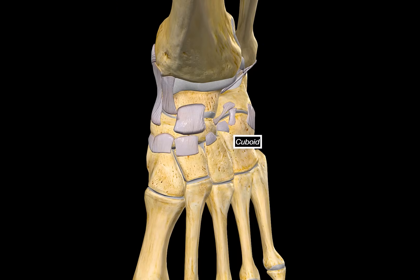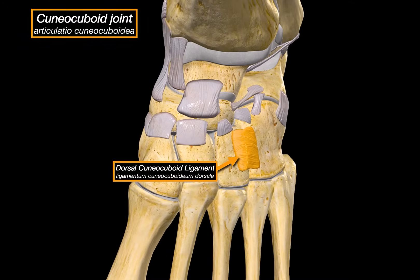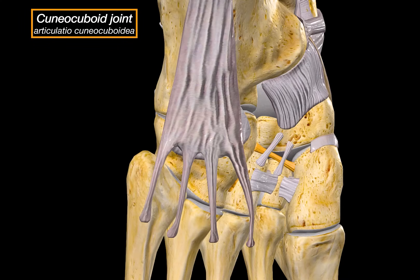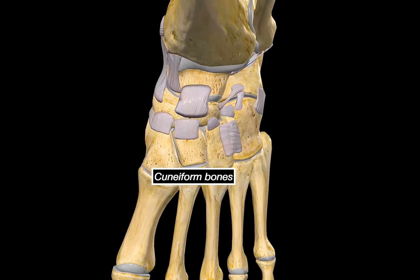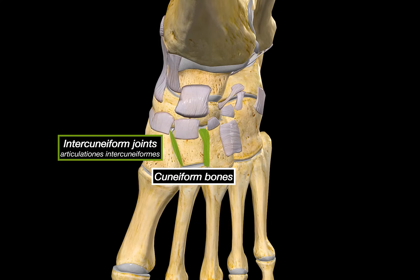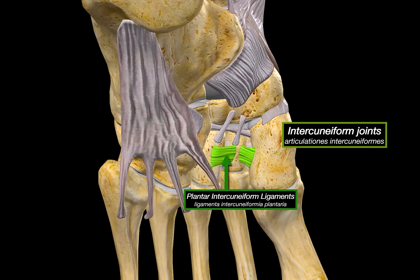Between the cuboid and the lateral cuneiform is the cuneo-cuboid joint, held in place by the dorsal cuneo-cuboid ligament on the dorsal side, the plantar cuneo-cuboid ligament on the plantar side, and deep between the bones, the cuneo-cuboid interosseous ligament, which help lock the joint and add structural support to the lateral arch. Between the three cuneiform bones are the intercuneiform joints, stabilized by dorsal intercuneiform ligaments on top, plantar intercuneiform ligaments on the plantar side, and intercuneiform interosseous ligaments between the bones.